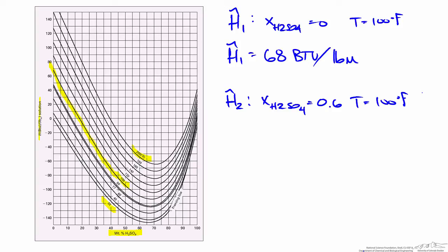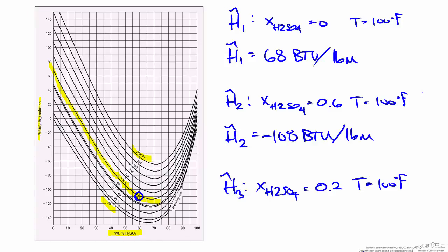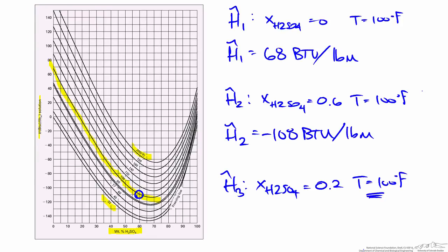For the second stream, the mass fraction of H₂SO₄ is 0.6, also at 100 degrees Fahrenheit. Tracing the 100-degree isotherm to x = 0.6, the specific enthalpy is slightly above negative 110 BTU/lb, so we'll use negative 108. For the outlet mixture, the mass fraction of H₂SO₄ is 0.2 from the mass balance, and the temperature stays at 100 degrees Fahrenheit. Following the 100-degree isotherm to x = 0.2, the specific enthalpy is between 0 and negative 10; we'll use negative 6 BTU/lb.